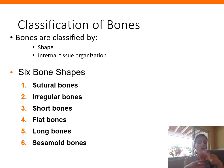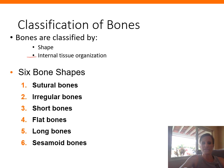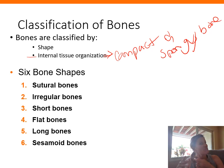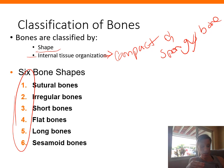We can classify bones in a couple of different ways. First, based on the organization of the bone tissue — compact bone versus spongy bone. Second, based on general shape, bones can be classified into six categories: sutural bones, irregular bones, short bones, flat bones, long bones, and sesamoid bones.